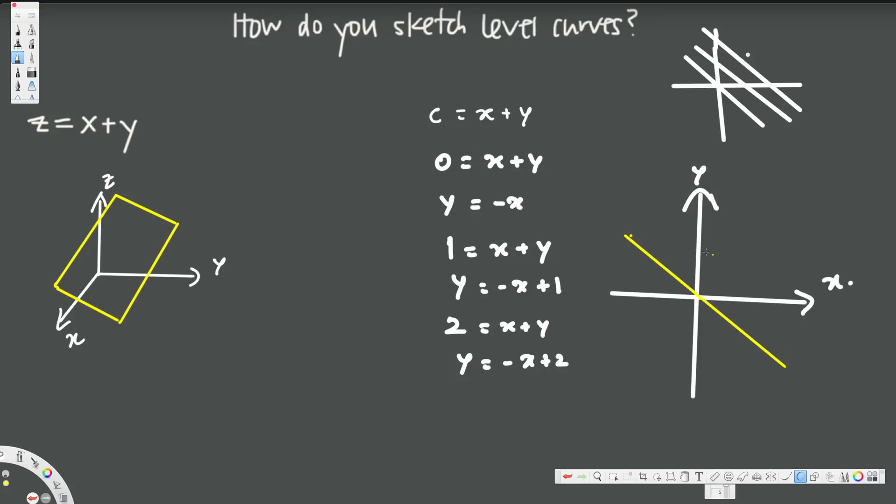When we put c = 1, we have a line shifted one unit upward like this. When c = 2, that's going to be two units shifted from the origin upward, so we have another parallel line.